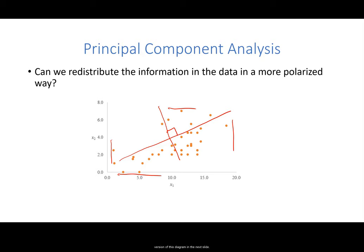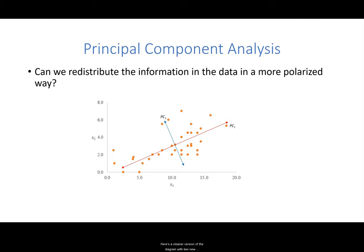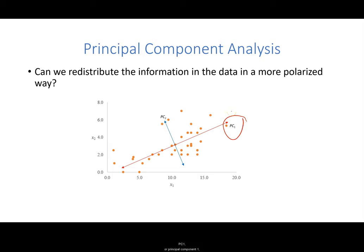Here is a cleaner version of the diagram with two new dimensions marked on the scatter plot. The first one — the diagonal line with the largest variability in data — is labeled PC1 or principal component 1. The other dimension, which is orthogonal to PC1 with the smallest variability, is labeled PC2 or principal component 2. These new dimensions have redistributed variance in data in a more polarized way: PC1 captures a very large portion of the variance, whereas PC2 captures only a very small portion.